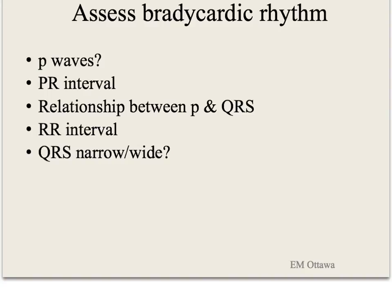To review: assess the bradycardic rhythm by checking whether there are P waves. If there are, measure the PR interval. Then look at the relationship between P and QRS complexes. Measure the RR interval, and then see whether the QRS is narrow or wide. We hope you find this helpful. Thank you for watching.